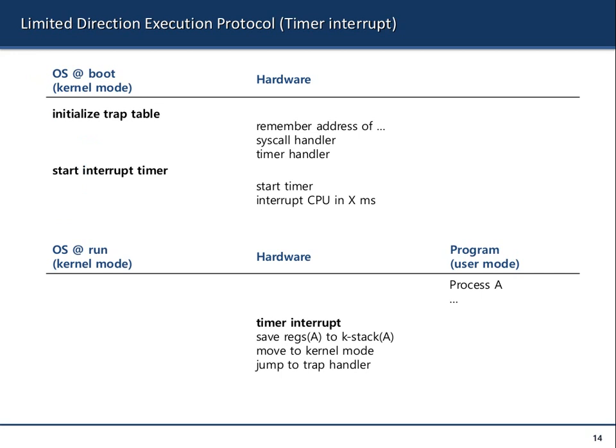This is the flowchart for that. When the operating system boots up, it initializes a trap table. In other operating systems like xv6, we're going to look at the code for initializing the interrupt. In x86, it's called the interrupt vector table or interrupt descriptor table.